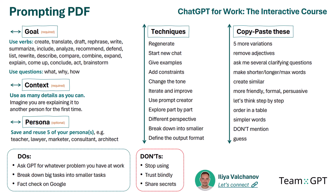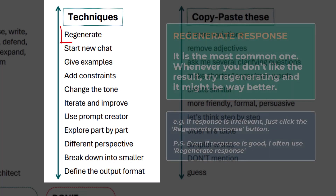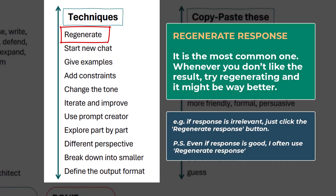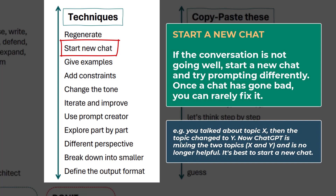Here are the most common techniques. First, regenerate response — this is the most common one. Whenever you don't like the result, try regenerating and it might be way better. Two: if the conversation is not going well, start a new chat and try prompting differently. Once a chat has gone bad, you can rarely fix it — you should either delete the messages or simply start a new chat.